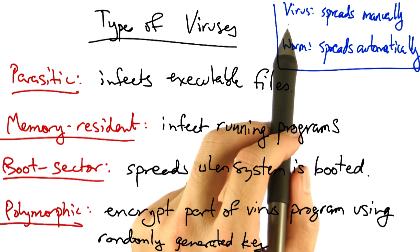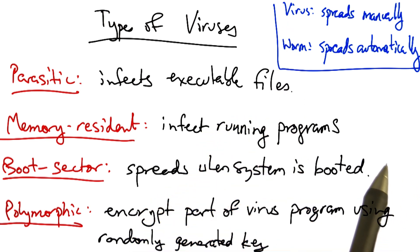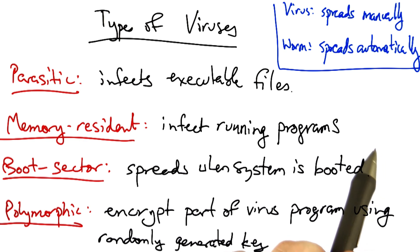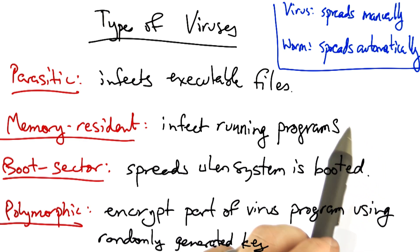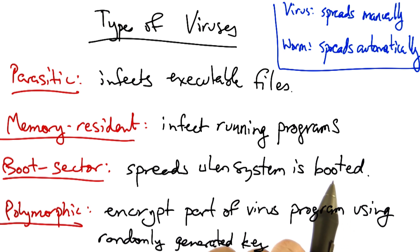One of the key differences between viruses and worms is that viruses typically spread with manual user intervention, whereas worms typically spread automatically by scanning for vulnerabilities and infecting vulnerable hosts when those vulnerabilities are discovered.